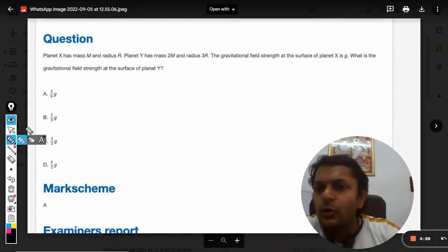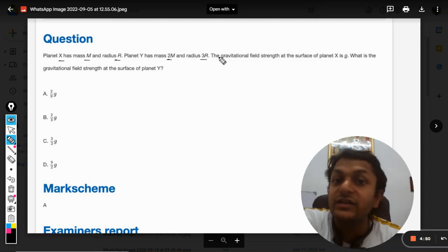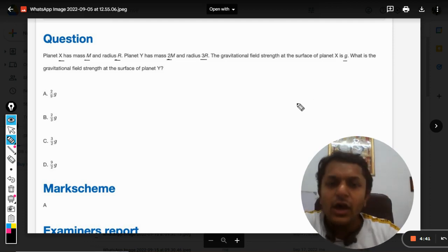Okay dear students, let us read this question. Planet X has mass capital M and radius capital R. Planet Y has mass 2M and radius 3R. The gravitational field strength at the surface of planet X is g. What is the gravitational field strength at the surface of planet Y?